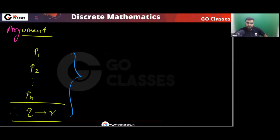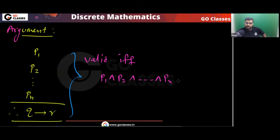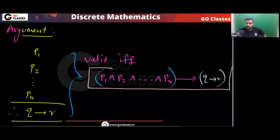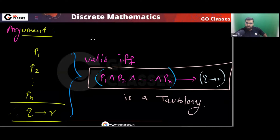I can say this argument will be valid if and only if P1 ∧ P2 ∧ ... ∧ Pn → (Q → R) is a tautology. This entire expression must be a tautology.